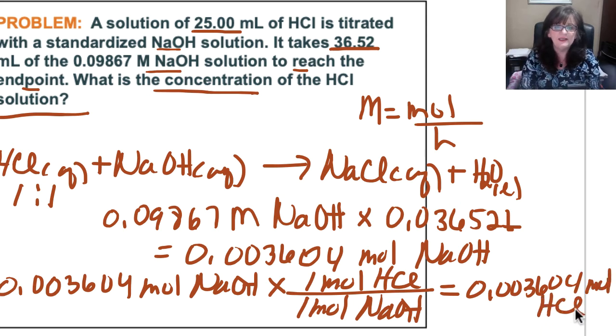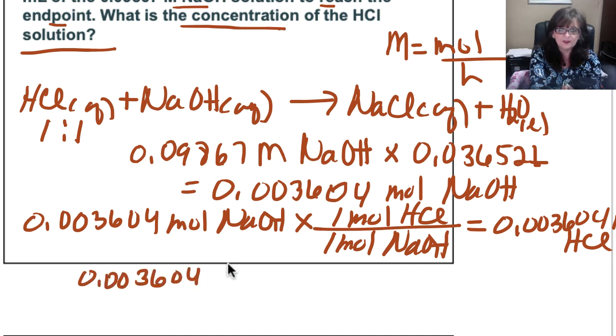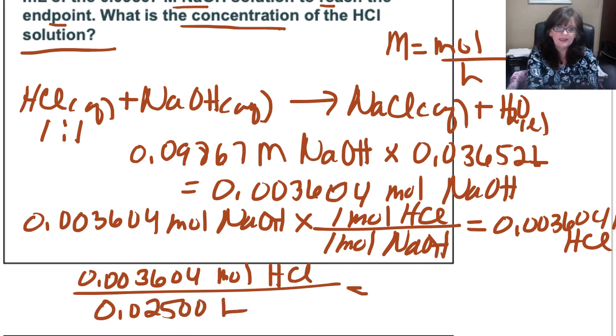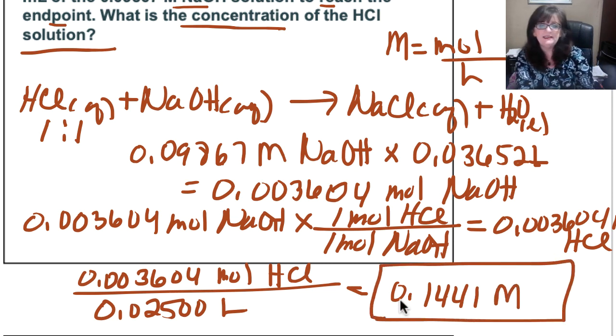So now all I have to do is determine the concentration. We have 25 milliliters which is the same as 0.025 liters, so we have 0.003604 moles of HCl over the 0.025 liters of solution. And that gives us a molarity of 0.1441 molar. So the hydrochloric acid has a molarity of 0.1441 molar.